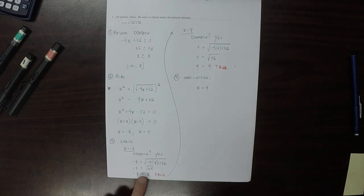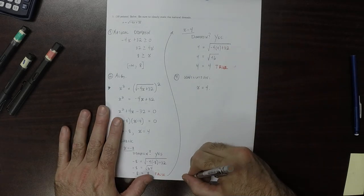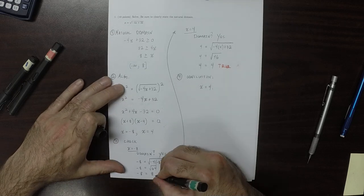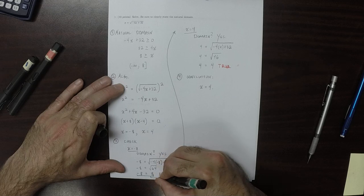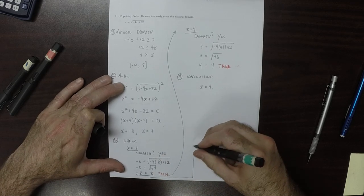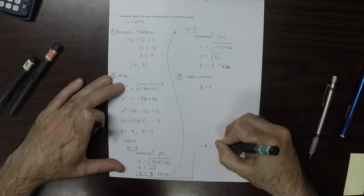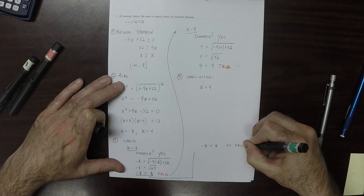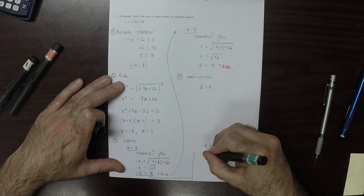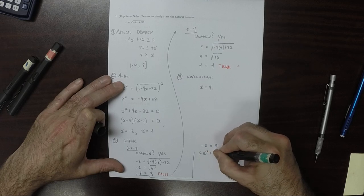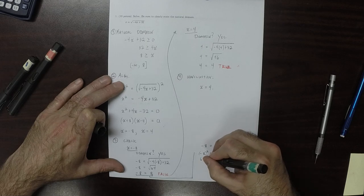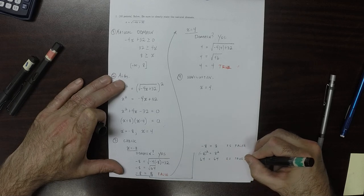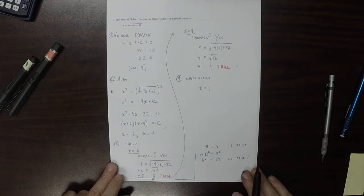By way of explanation: the equation negative 8 equals negative 8 is false. But when you square both sides, negative 8 squared equals 8 squared, which is 64 equals 64 — this is true. So squaring both sides doesn't necessarily preserve the truth.